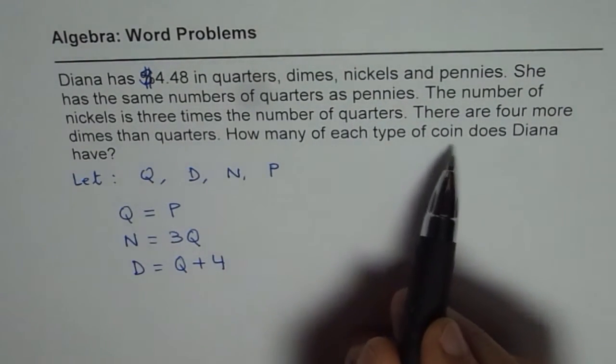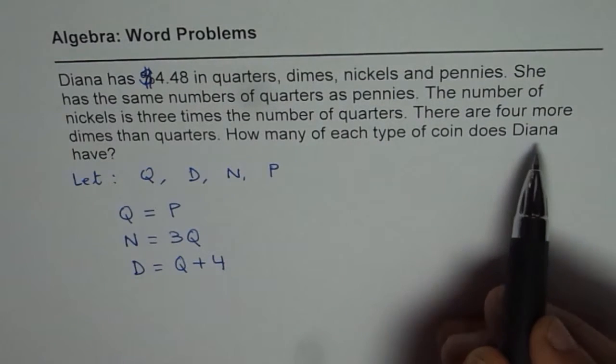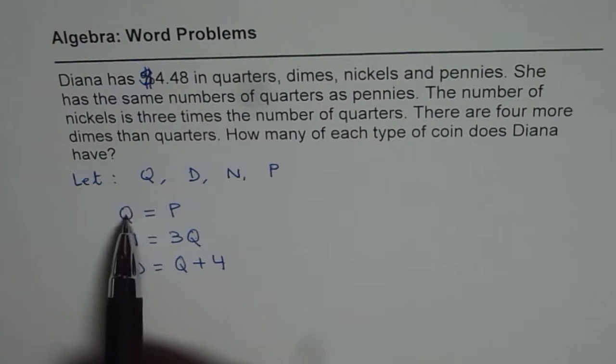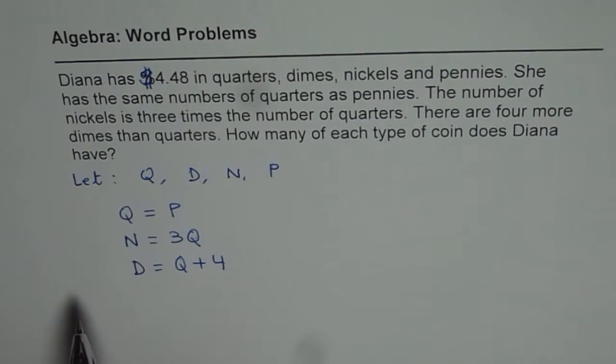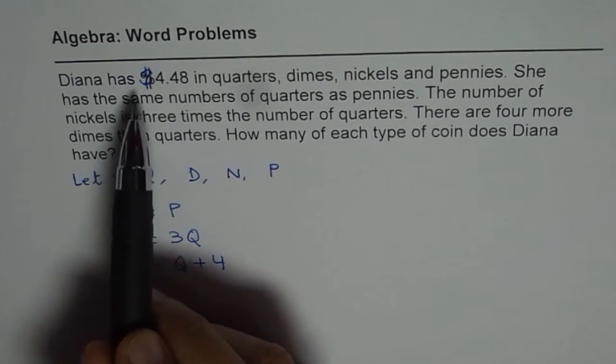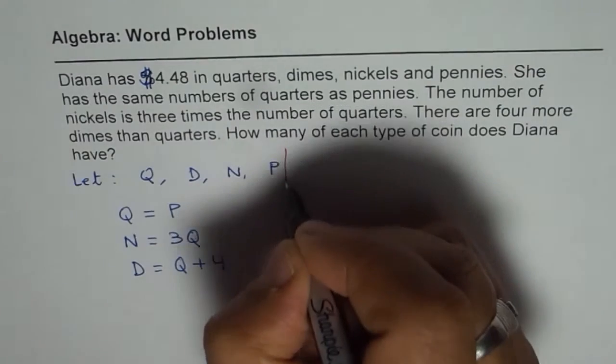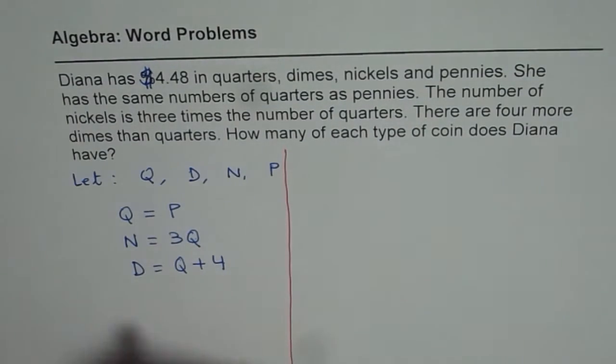How many of each type of coin does Diana have? So now we know all in terms of one another. Now what we can do is we can write all in terms of Q, the quarters, because pennies and quarters are also of the same number. So let's get the value of the money which we have.